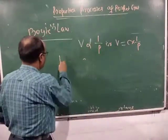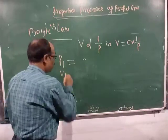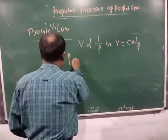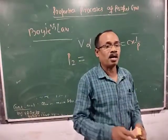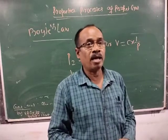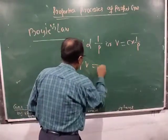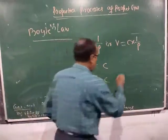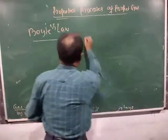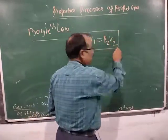If P1 is the initial pressure of the given mass of the gas and V1 is the initial volume of the given mass of the gas, then P2 is the final pressure of the gas and V2 is the final volume of the gas. Then according to the law, P1V1 equals C and P2V2 equals C. That means P1V1 equals P2V2. This is the statement of Boyle's law.